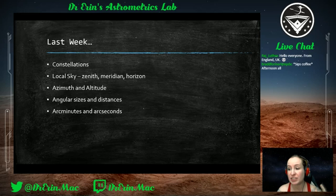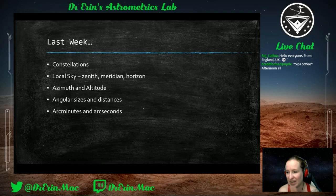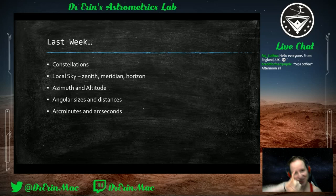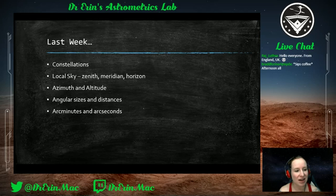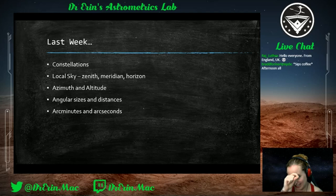We talked about angular sizes and distances — not how physically big or far away things are, but how many degrees they make up in the night sky. You can measure roughly one degree, five degrees, ten, twenty degrees as you look around. When you get to really small scales, you divide degrees into arc minutes — there are 60 arc minutes in a degree, and 60 arc seconds in every arc minute.